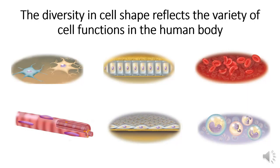The lower left cell is a muscle cell that is elongated but can shorten during contraction. The lower middle diagram shows a row of epithelial cells that provide a thin membrane in the lungs across which gases can flow. The lower right diagram shows white blood cells that secrete substances providing immune protection.